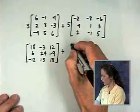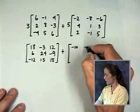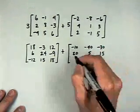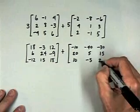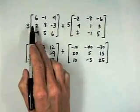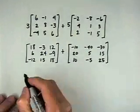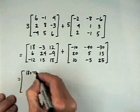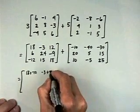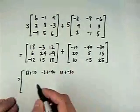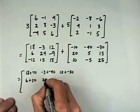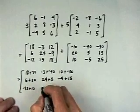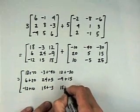I want to add to that 5 times every element in the second matrix: negative 10, negative 40, negative 30, 25, 15, 10, negative 5, 25. I've done the scalar multiplication part of the problem. Now I add. The sum of entries in each position: 18 plus negative 10, negative 3 plus negative 40, 12 plus negative 30, 6 plus 20, 24 plus 5, negative 9 plus 15, negative 12 plus 10, 15 plus negative 5, and 18 plus 25.